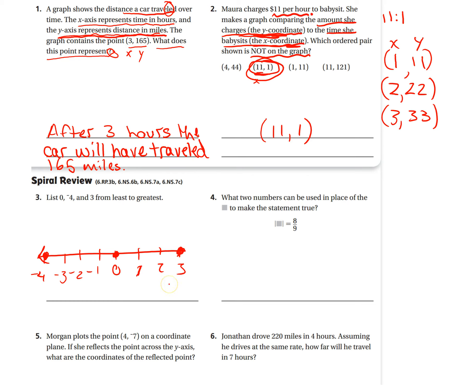Now you should be able to list these numbers from least to greatest. Okay, number 4. What two numbers can be used in place of the box to make the statement true? So what two numbers—you're going to have a positive and a negative number that you could put here to find the absolute value, and it would equal 8 ninths.